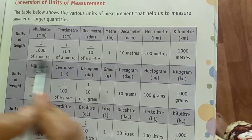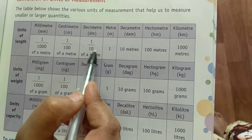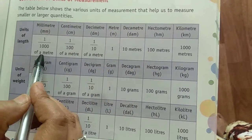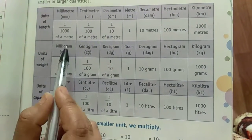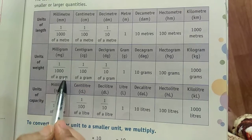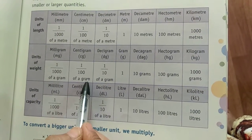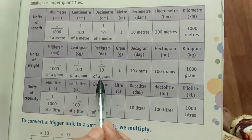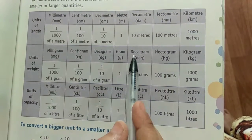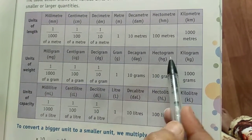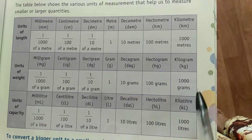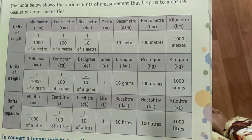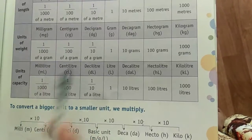On the left side they are dividing, and on the right side they are multiplying. For units of weight: milligram is 1 by 1000 of a gram, centigram is 1 by 100 of a gram, decigram is 1 by 10 of a gram, decagram is 10 grams, hectogram is 100 grams, kilogram is 1000 grams. Moving right, multiply by 10; moving left, divide by 10.